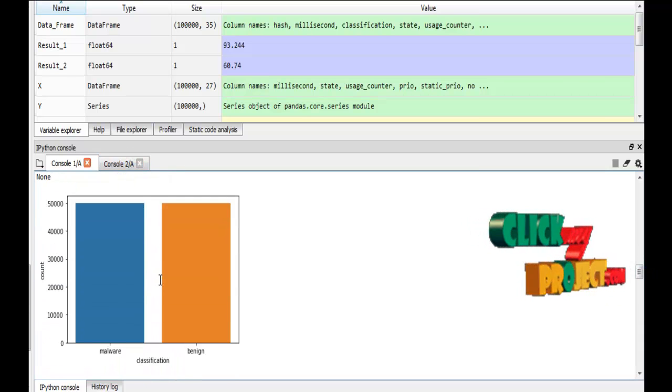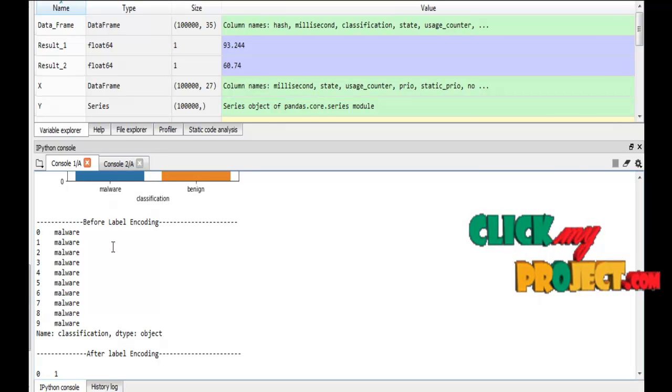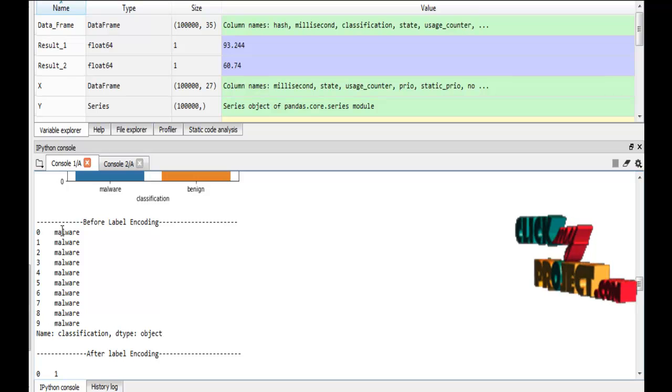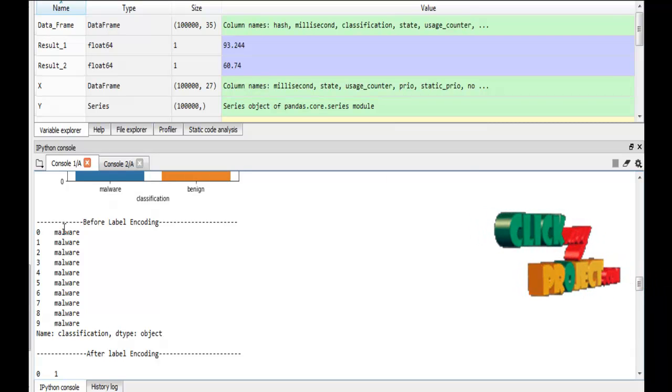Here, just compare the graph between malware and benign. The malware is an attack and non-attack here displaying. In preprocessing, the second thing is label encoding. Here, I just display the first 10 columns only.